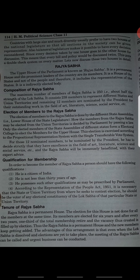Qualifications for Rajya Sabha membership: the candidate should be a citizen of India, not less than 30 years of age, and must possess such other qualifications as prescribed by parliament. According to the Representation of the People Act 1950, the candidate should be a voter of any electoral constituency of a Lok Sabha or of the particular state or union territory from where they seek to contest election.